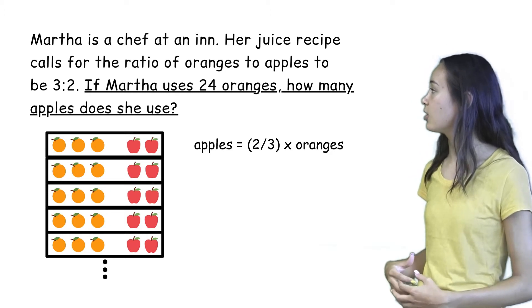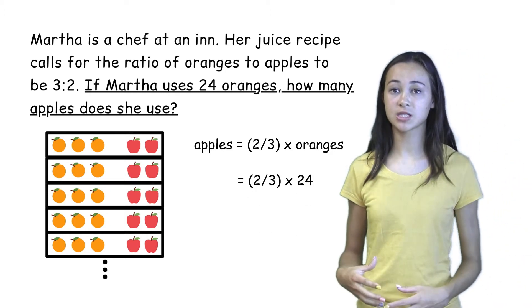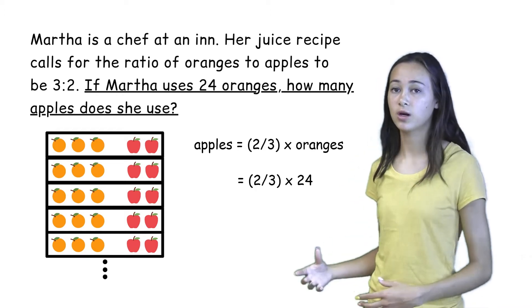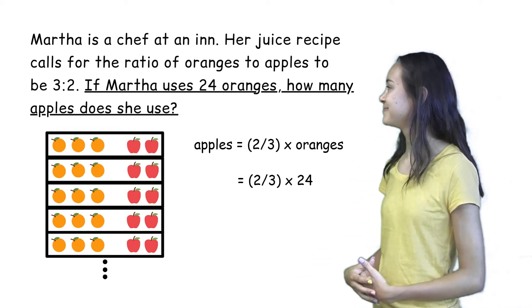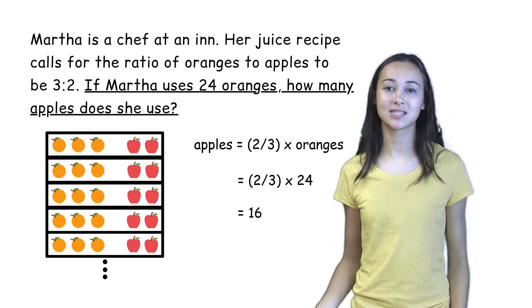And since there are 24 oranges, the number of apples is going to be two-thirds times 24, which is 16. So Martha uses 16 apples to make her juice.